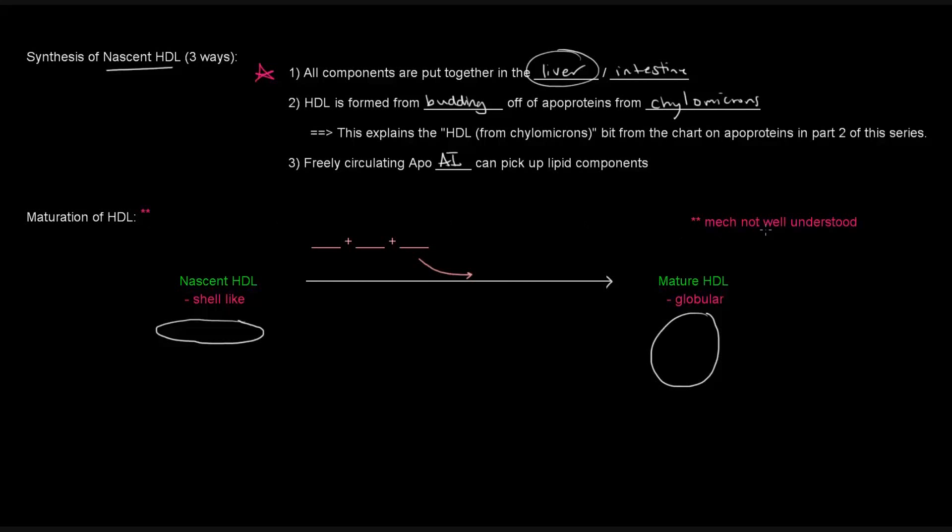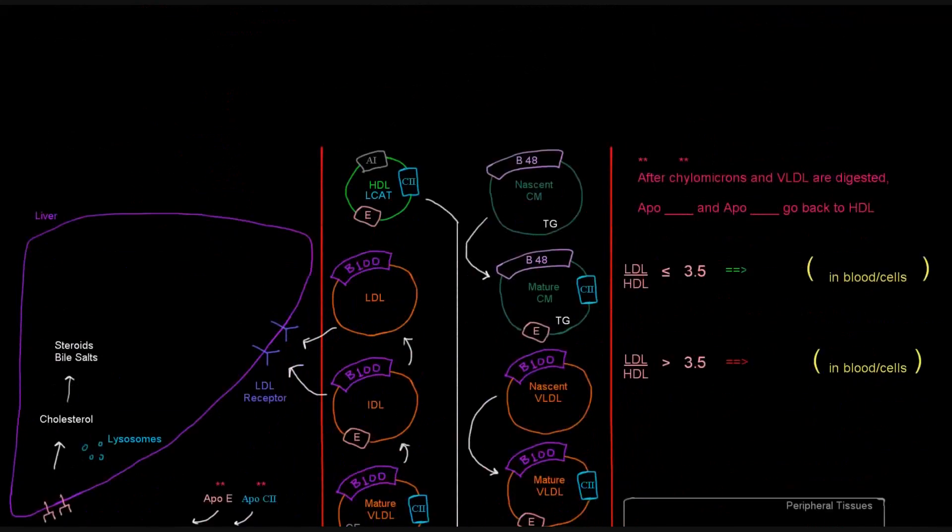So that's how you make the nascent HDLs, and then they have to mature. Though the maturation is not very well understood, basically what happens is that you have a shell-like HDL, which can become globular, and what is known to be involved is the addition of phospholipids, cholesterol, and cholesterol esters to the nascent particle to give you the mature particle. The mechanism by which it actually occurs is unknown. It's not well understood, so I don't really know too much about it, but I didn't discover this much. So let's look at the diagram to sort of follow HDL and what it does.